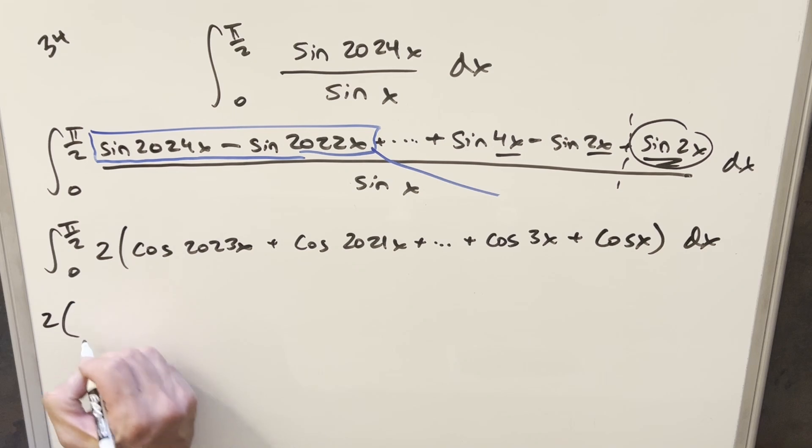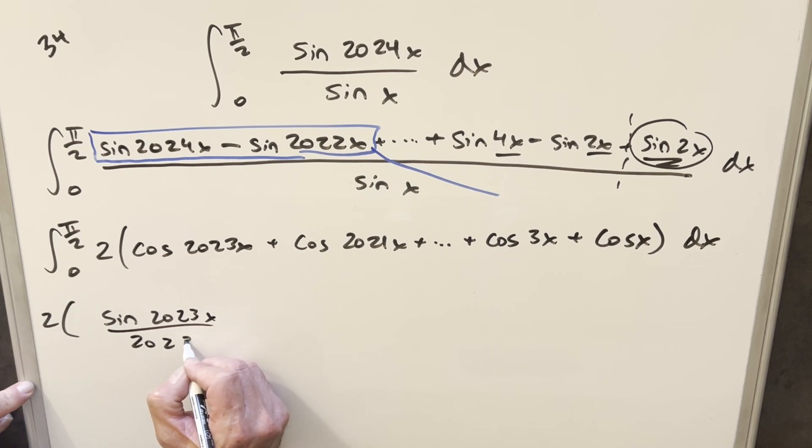I'll just factor this 2 out in front. So for the first one, we're going to have sine 2023x over 2023. Then for the next one, we're going to have sine 2021x over 2021.